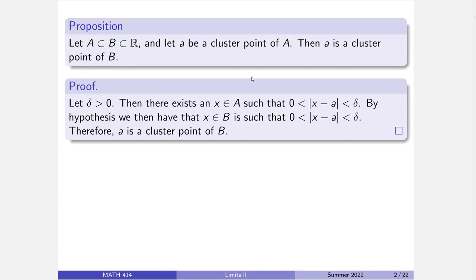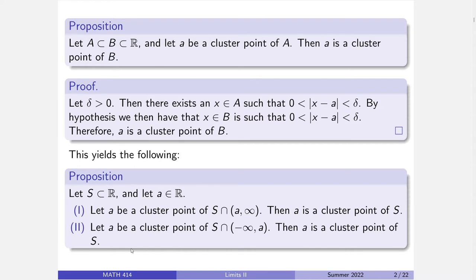This result immediately implies the following: if A is a cluster point for a set consisting of elements only to the right of A, that's a cluster point of the original. So if I've got a right-handed limit — a limit coming in from the right — likewise, if A is a cluster point of S intersected with all the elements to the left of A, then that's a cluster point for S. So if I'm taking a limit from the right and from the left, then taking a full limit is a valid thing.